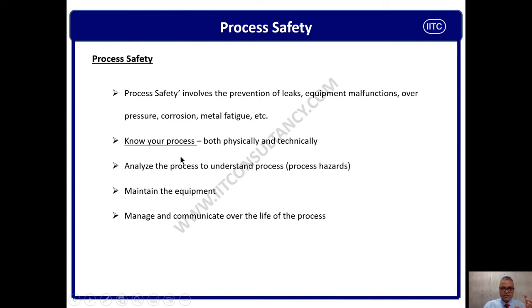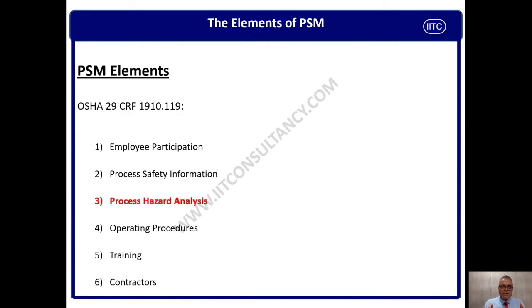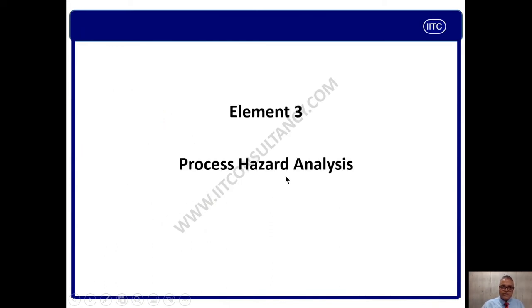Process Hazard Analysis also deals with maintenance, because maintenance involves reliability, availability, and maintainability managed over the life cycle of the process. We must see the complete life cycle of process safety in this management system. Element number three — PHA — is highlighted, and other element programs are available on IRTC channel.